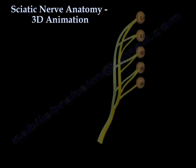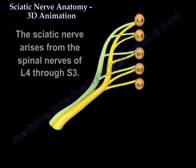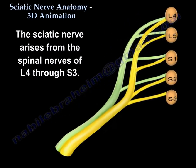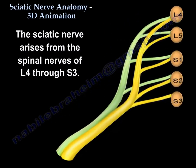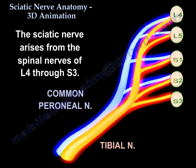Sciatic nerve anatomy 3D animation. The sciatic nerve arises from the spinal nerves of L4 through S3. It has two components: the common peroneal nerve and the tibial nerve.